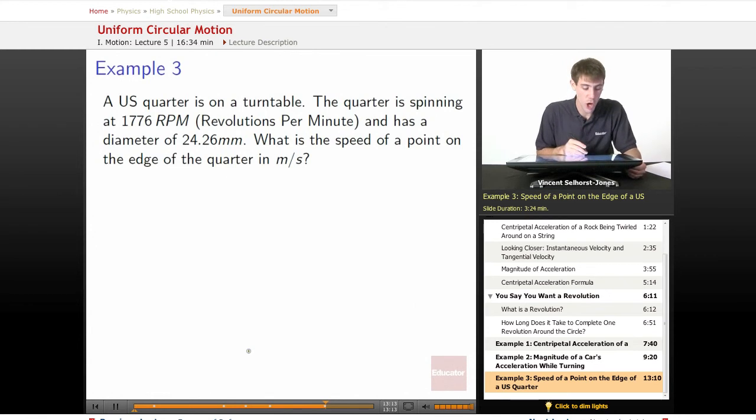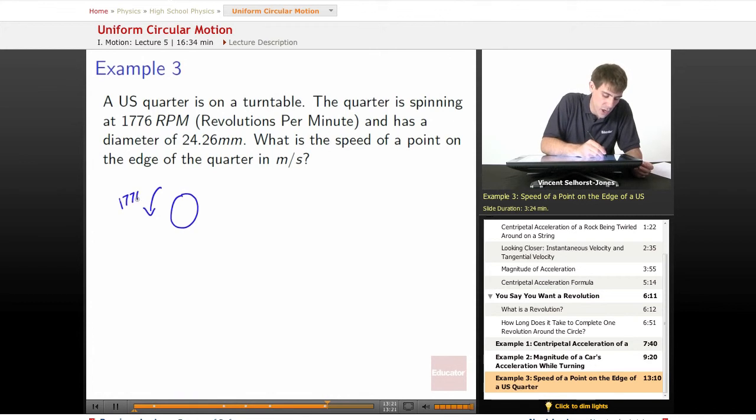Example three, final example. We've got a U.S. quarter on a turntable. The quarter is spinning at 1776 RPM, which is revolutions per minute, and has a diameter of 24.26 millimeters.